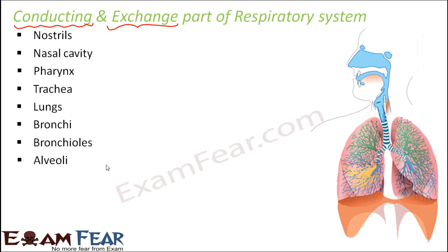Starting from the nostrils: when you breathe in, air passes through the nostril, so it helps in conducting the air, just allowing it to pass through. Then the air goes to the nasal cavity, which also just allows the air to pass through. Then it passes through the pharynx, which does the same thing — no exchange of gases takes place there. The air then travels through the trachea, from trachea to the bronchi, from bronchi to the bronchioles, and from bronchioles it finally reaches the alveoli.